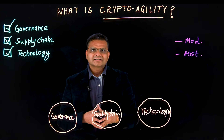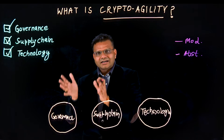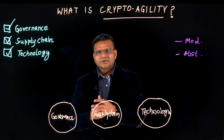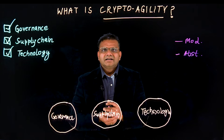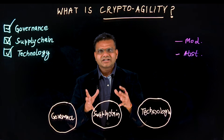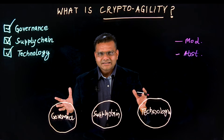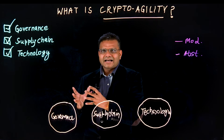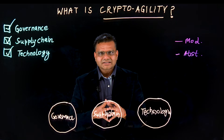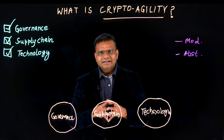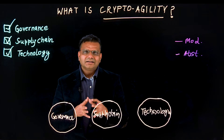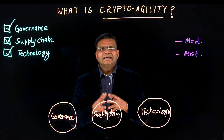Abstraction means detaching the hard coding of cryptography implementations from your applications, network, and systems, so that every time you make a cryptography change, you make it in a single centralized place and replicate those changes across the other locations. This is only possible if you have abstracted the cryptography implementations within your applications, and it is essential to being truly agile.